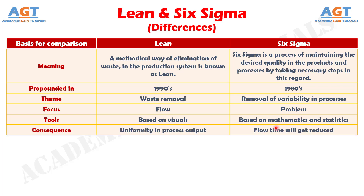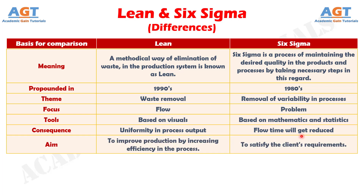Difference Number 6: Implementation of Lean will result in uniformity in the output of the process. On the other hand, implementation of Six Sigma techniques will lead to the reduction of flow time of the operations. Difference Number 7: The aim of Lean is to improve production by increasing productivity. Conversely, Six Sigma aims at fulfilling client's requirements.